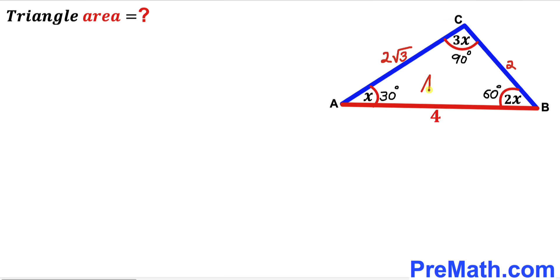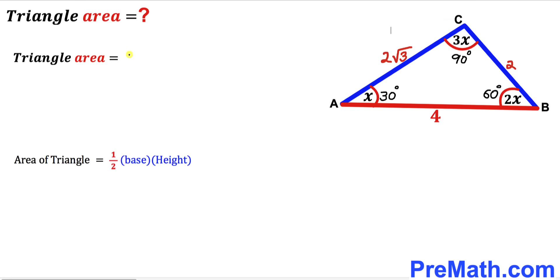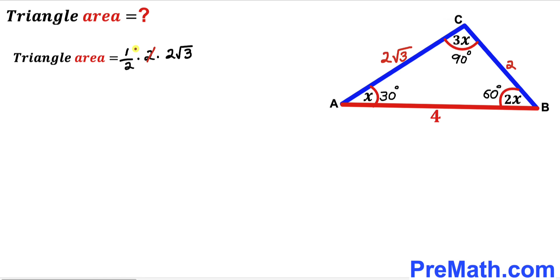Now for the final step: we calculate the area of triangle ABC. Recalling the area of a triangle formula: area equals one-half times base times height. In our case, BC is the base and the other leg is the height. So the area equals 1/2 times 2 times 2√3. The 2 and the 1/2 cancel out.